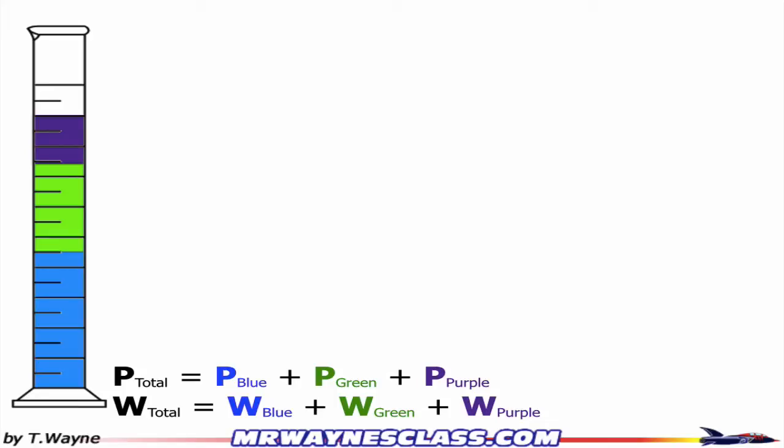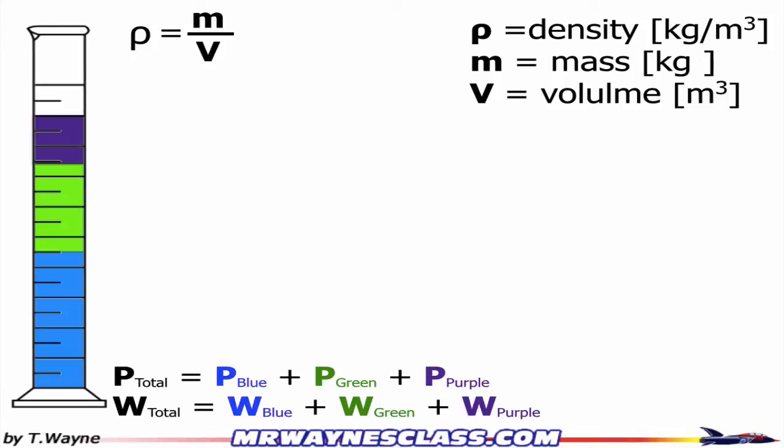So to figure out how this works, I'll start with my definition for density. Density is equal to mass over volume. Now since I want to talk about mass, I'm going to rearrange this so it's mass is equal to density times volume.